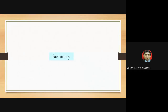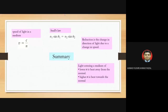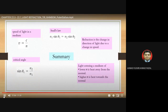To summarize chapter 22: refraction is the change in direction of light due to a change in speed. Light entering a medium of lower n is bent away from the normal; entering a higher n medium it bends toward the normal. The speed of light in a medium is c/n. Snell's law: n1 sine theta1 = n2 sine theta2. Critical angle: sine theta c = n2/n1.